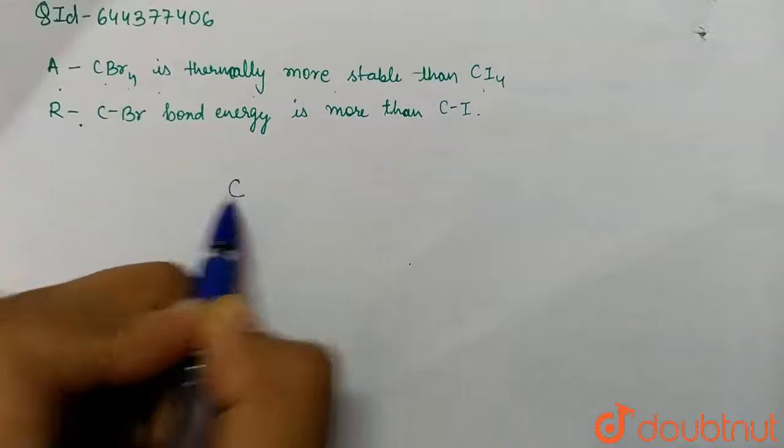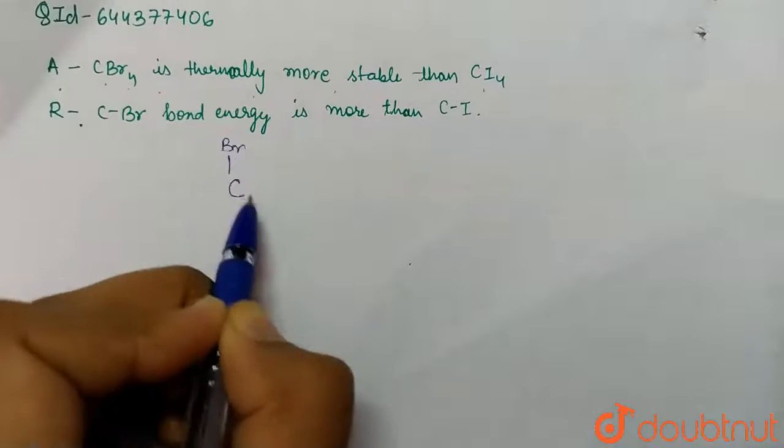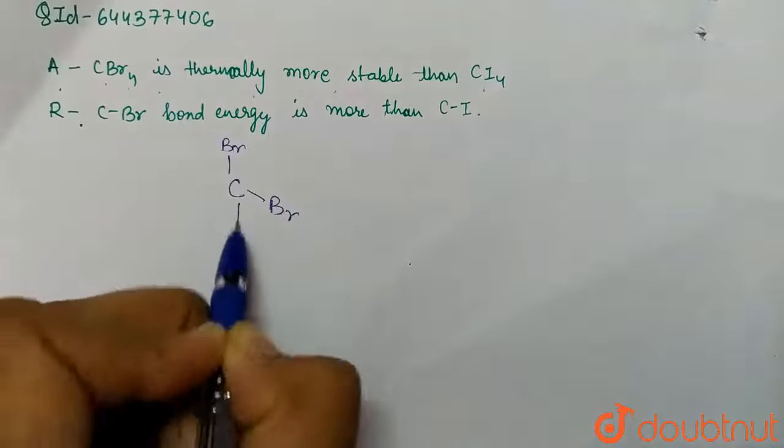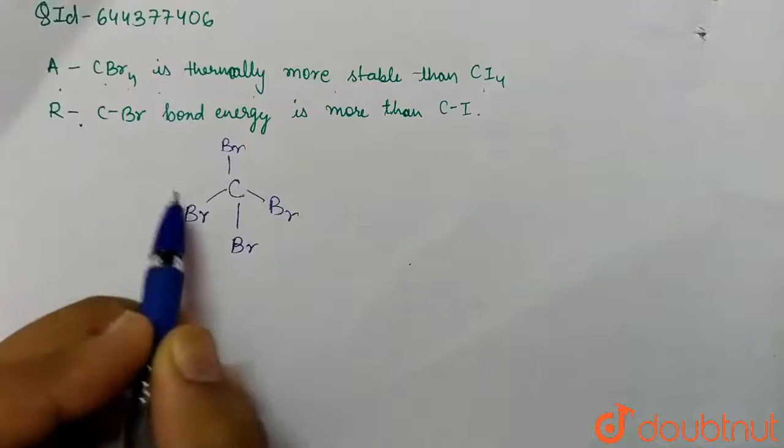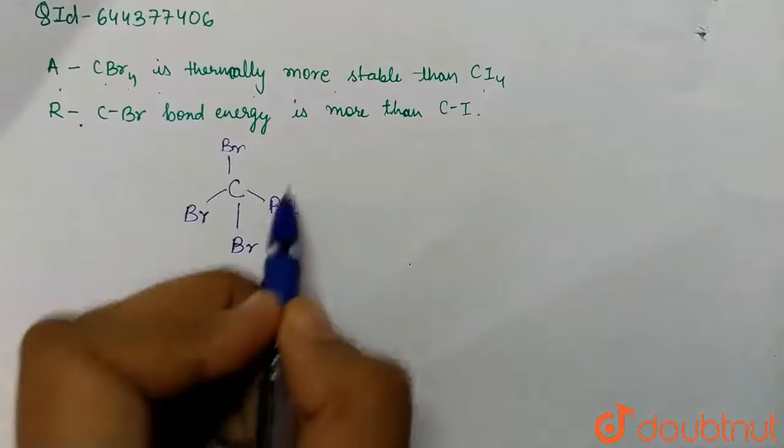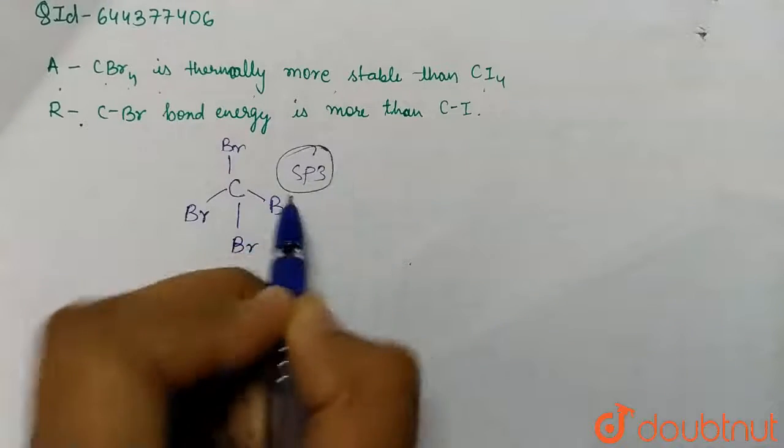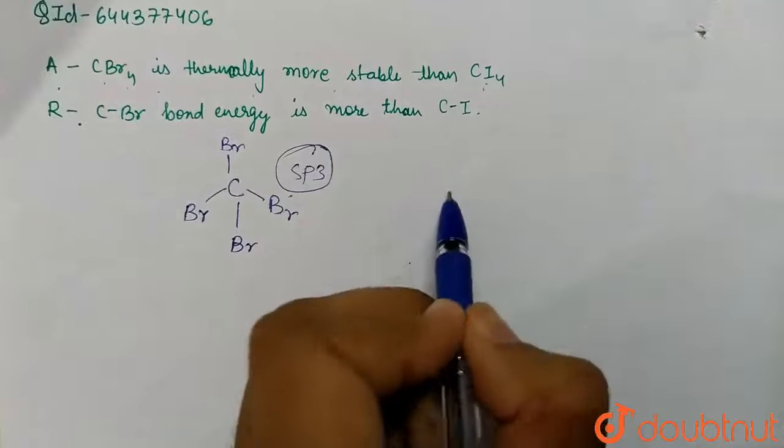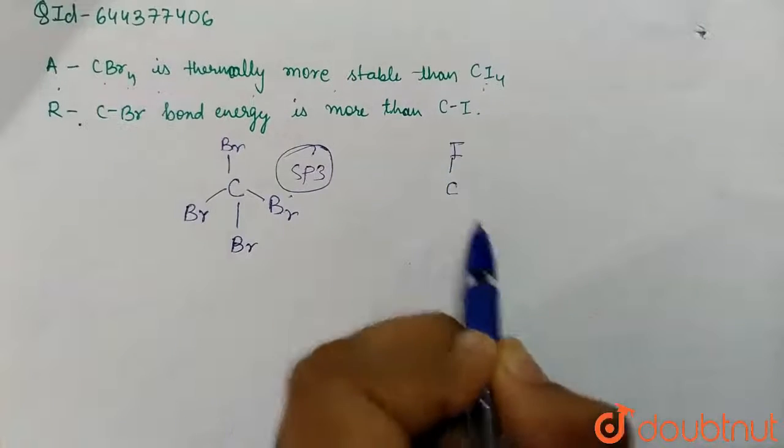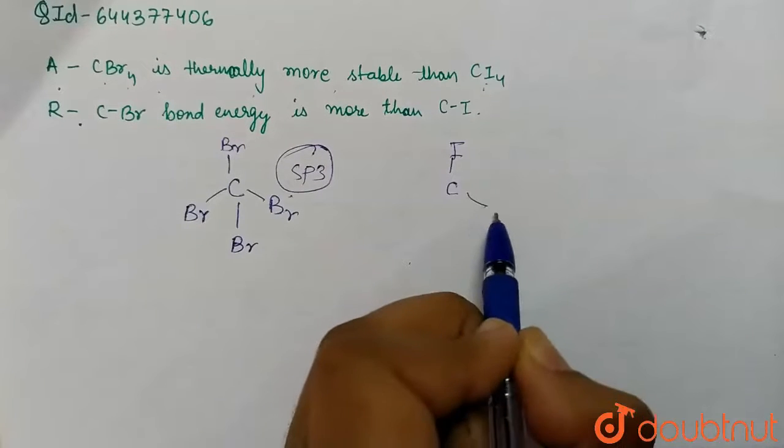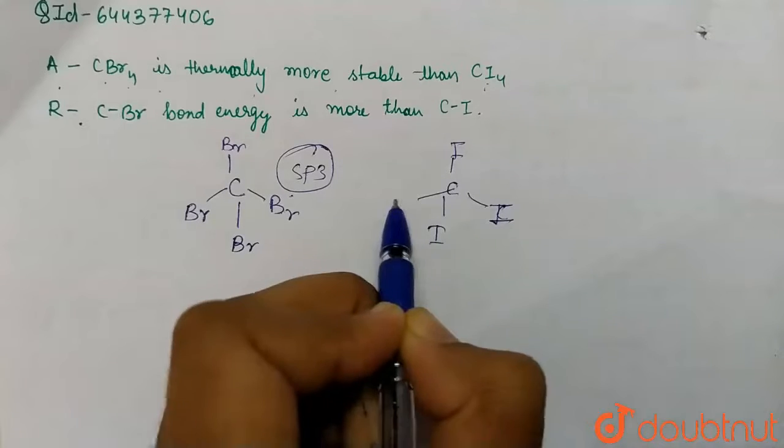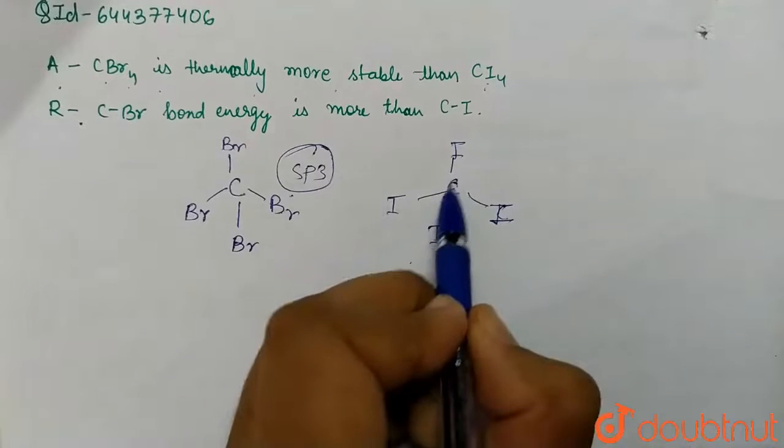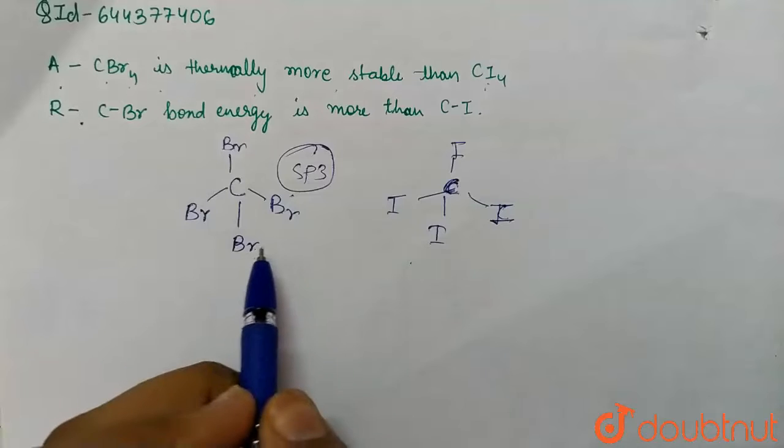Here we have CBr4, so the structure of CBr4 will be like this: we have Br, Br, and Br. Since CBr4 is sp3 hybridized compound, and then we have CI4, which is also sp3 hybridized compound. Its structure will be tetrahedral, with I, I, and I. This is the structure of CI4.